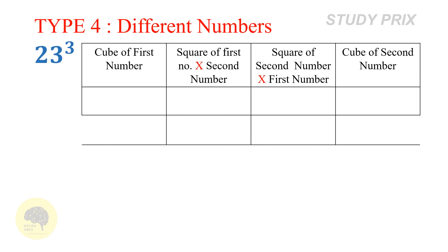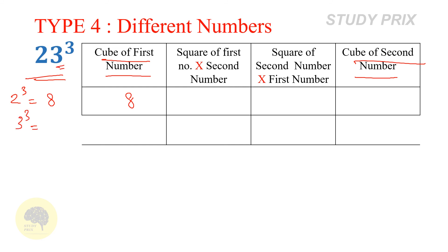Coming to the last type — different numbers. We have to find the cube of 23. In the first column write the cube of the first number: cube of 2 is 8. In the fourth column write the cube of the second number: cube of 3 is 27. In the second column write the square of the first number multiplied by the second number: 4 times 3 is 12.